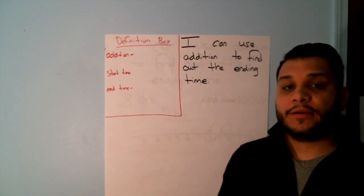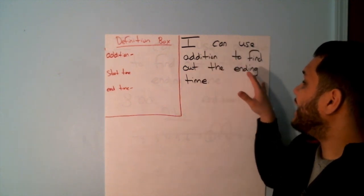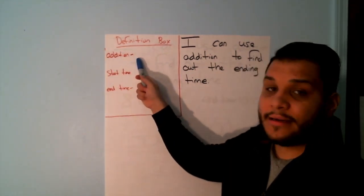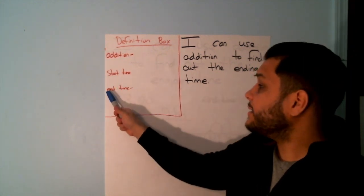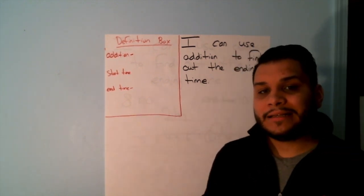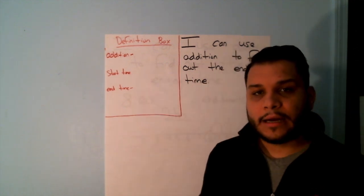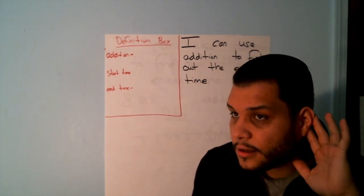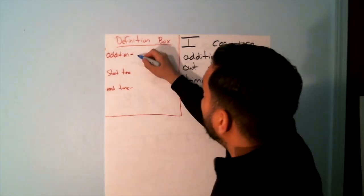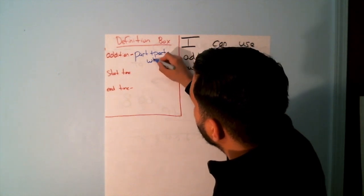As mentioned previously, we said that our I can statement today was I can use addition to find out the ending time. In our definition box, we have three words that we're going to focus in on today. We have addition, start time, and end time. Now, I know you guys know the formula for addition. So when I'm talking about addition, what is it that I'm doing? Something plus something equals something else. Let me hear you say it. Now whisper it. Now scream it. Yes. Addition is part plus part equals whole.